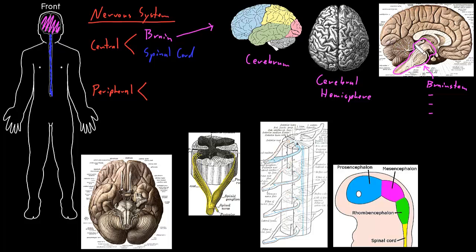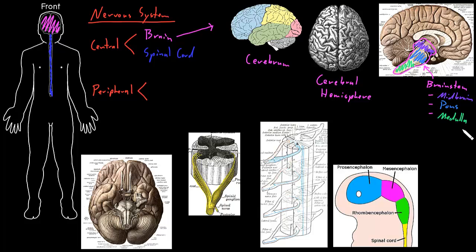The very top part of the brain stem that connects to the cerebrum is called the midbrain. The middle part just below the midbrain is called the pons — P-O-N-S. Under the pons, the part that actually connects to the spinal cord is called the medulla, or medulla oblongata. And the last part, behind the brain stem and connected to it, is the cerebellum.